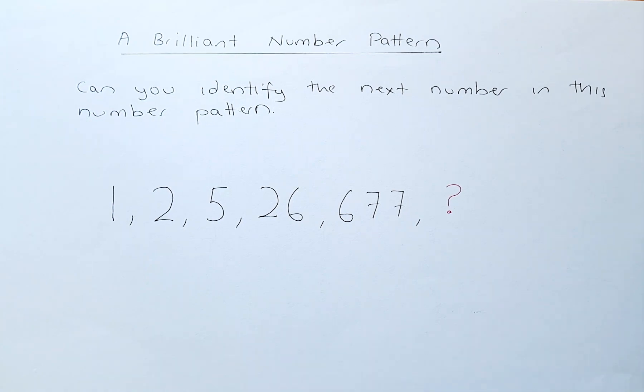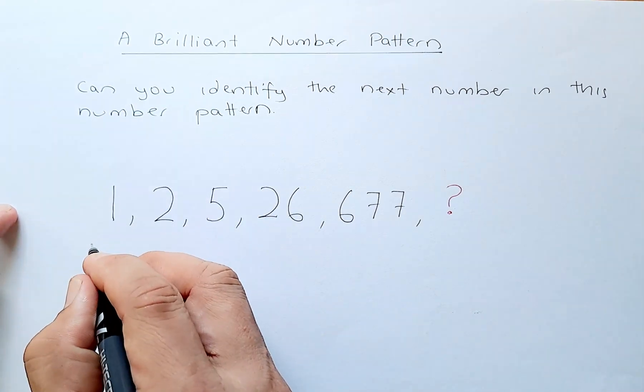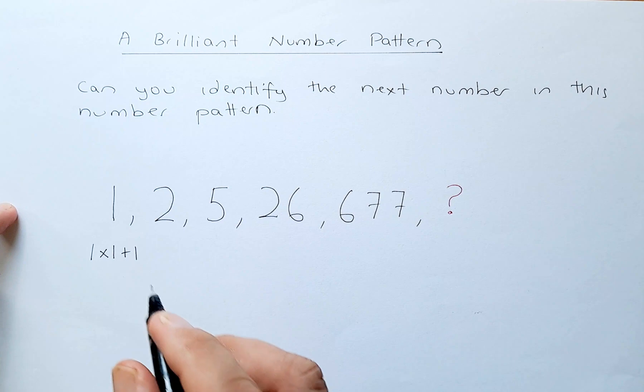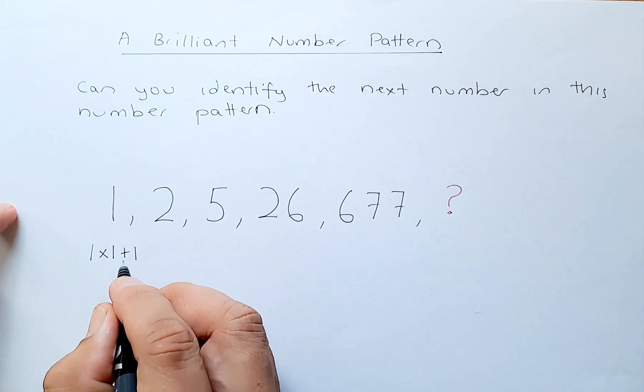1 is actually going to be 1 squared. They are going to do 1 times 1 and they are going to plus 1. So 1 times 1 is 1, plus 1 is going to give you 2.